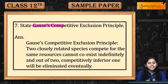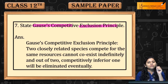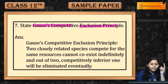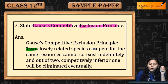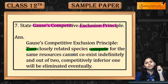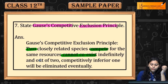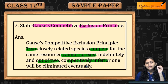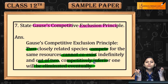Q7. State Gauss' Competitive Exclusion Principle. Gauss' Competitive Exclusion Principle क्या बताता है? That though closely related अगर species है, then वो compete करती है for same resources and cannot coexist indefinitely. Out of two, the competitively inferior one will be eliminated.